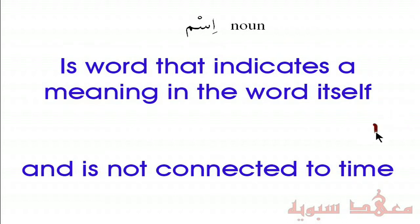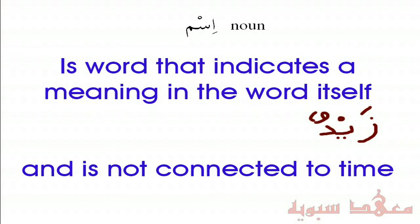So if we said Zaydun — this is the name of a person — when we say Zaydun, we mean Zayd. The name indicates its meaning, and the meaning is inside the word. That's what the definition means. The reason why we define a word in this way is to distinguish it from the harf, and we'll understand that in more detail when we get to the harf, or the particle.